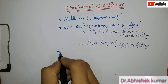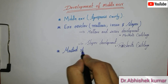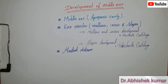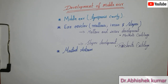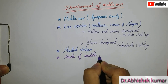Mastoid antrum development: the dorsal expansion of the tympanic cavity gives rise to the mastoid antrum. The mastoid antrum is almost of adult size at birth. Mastoid air cells are not present in the newborn infant; mastoid air cells develop at the age of two years.